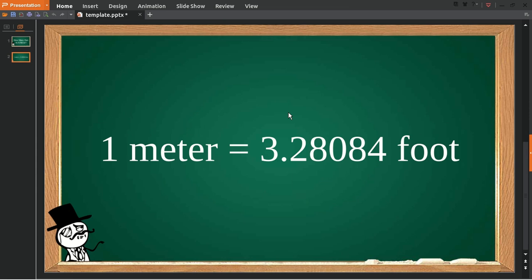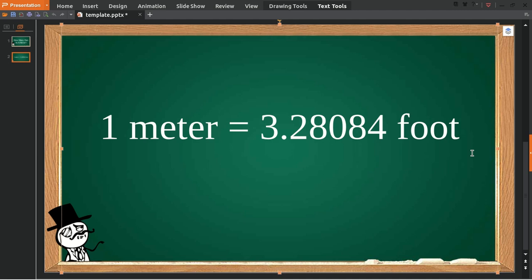Here's the answer. Okay, here's the formula, meter to foot conversion. One meter is equal to 3.28084 foot.